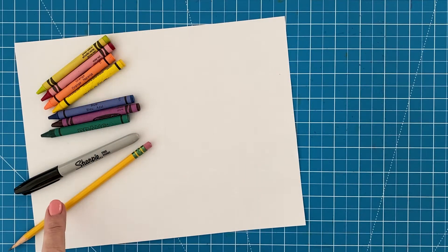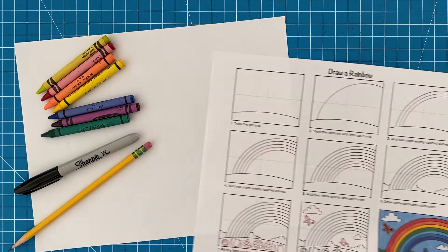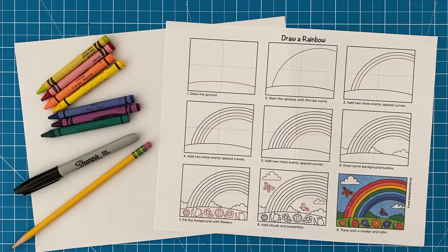Before you begin your drawing, you need to collect your art supplies: a sheet of drawing paper, pencil, black marker, and crayons. To follow along with a printed set of directions, this rainbow tutorial can be downloaded for free from my website.